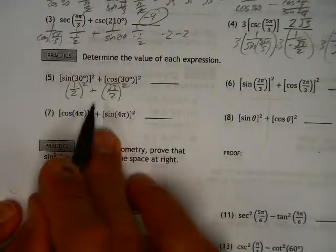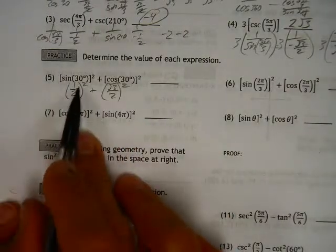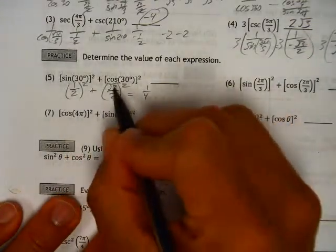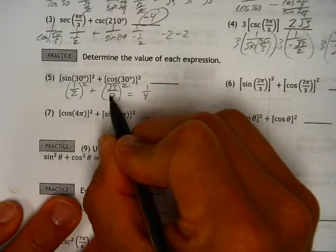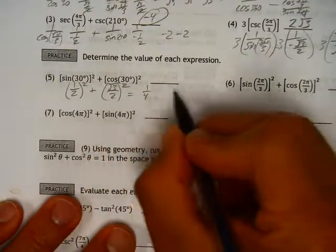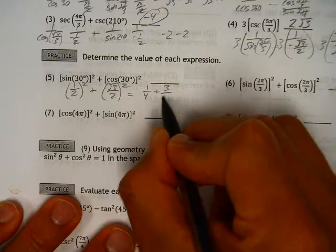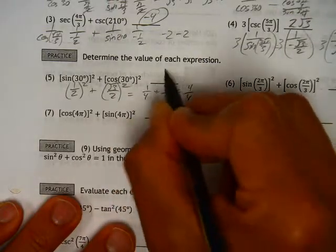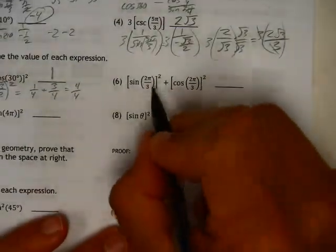Once we get to here, squaring it is just a matter of multiplying the top and bottom by itself, so one half squared is 1 over 4. Root 3 over 2 squared isn't as bad as one would think, because when you square the root 3, it becomes just 3. 2 squared is 4, you add that together, it's 4 over 4, which is 1. Well, that's kind of convenient, what a lucky break.